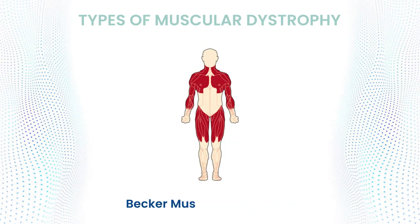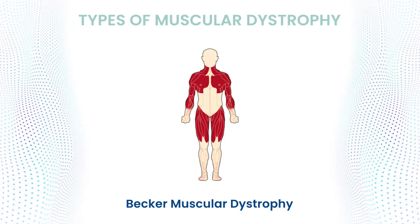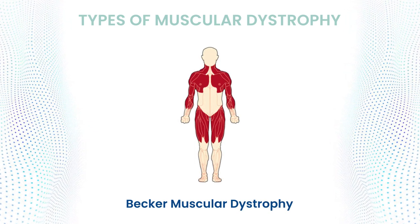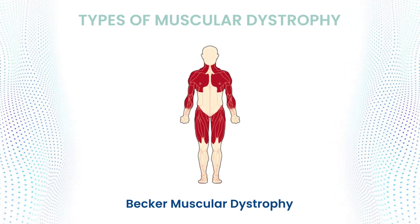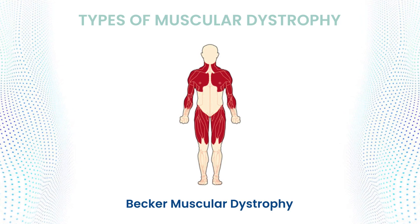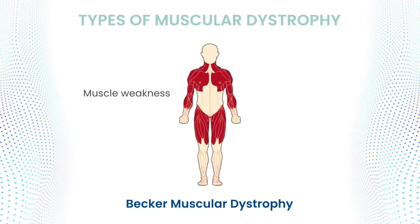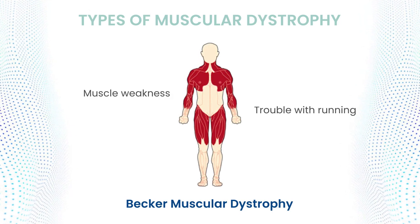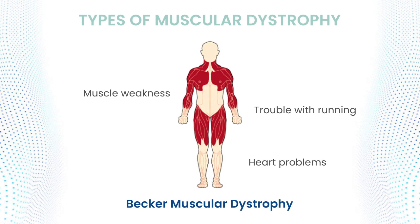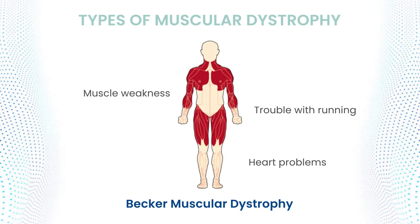Becker muscular dystrophy, BMD, is similar to DMD — it affects boys, but the symptoms are milder and progress more slowly. Muscle weakness, trouble with running, and heart problems are commonly associated with BMD.